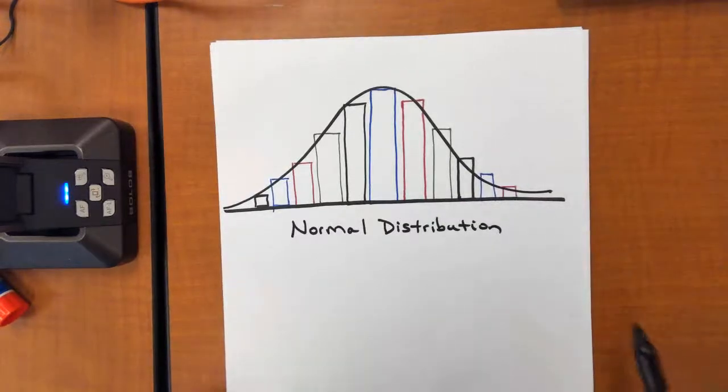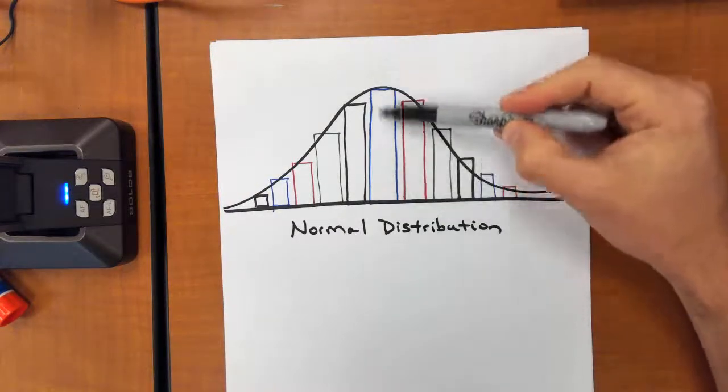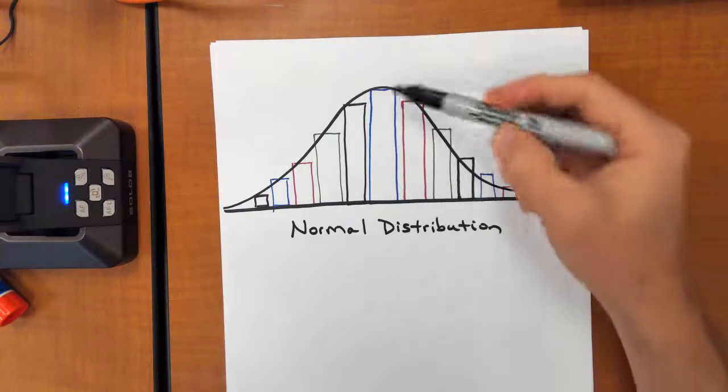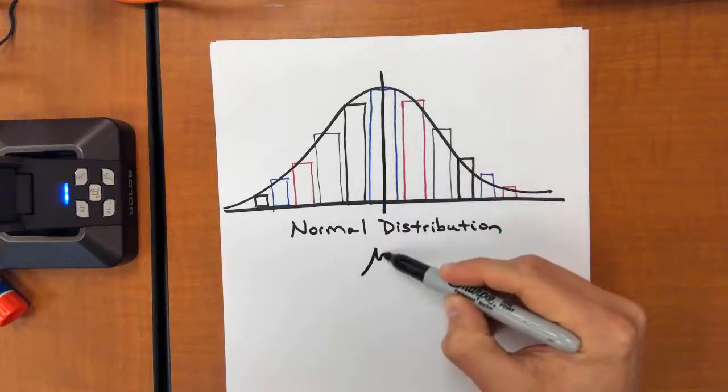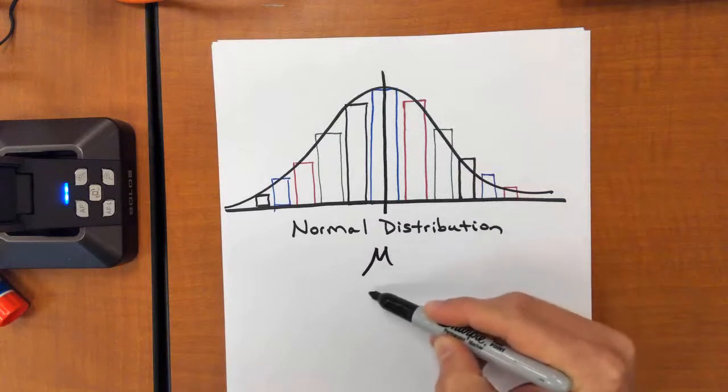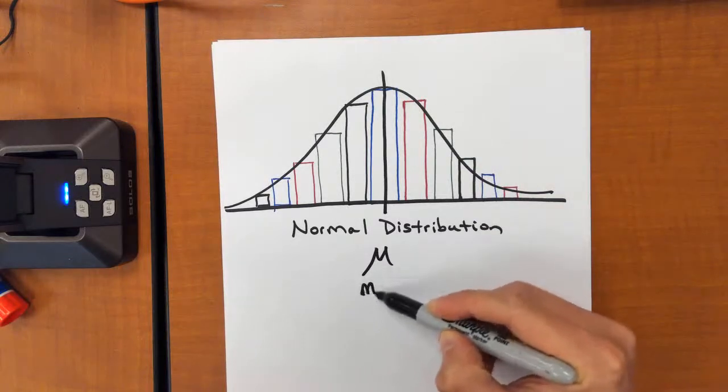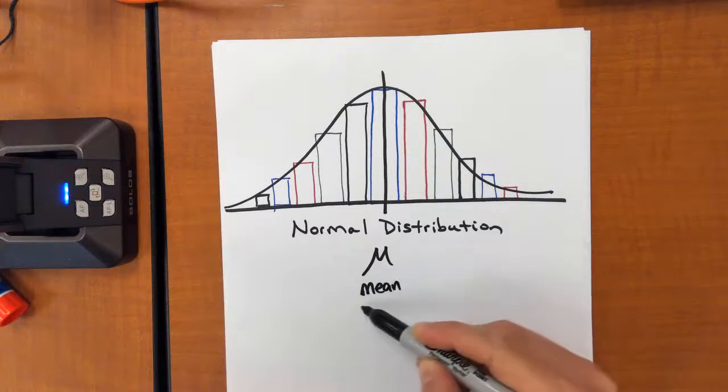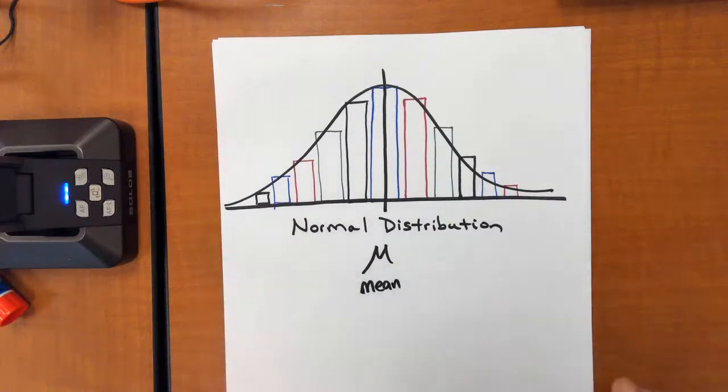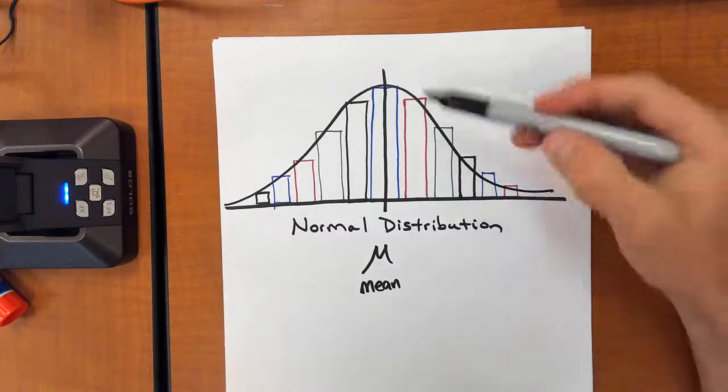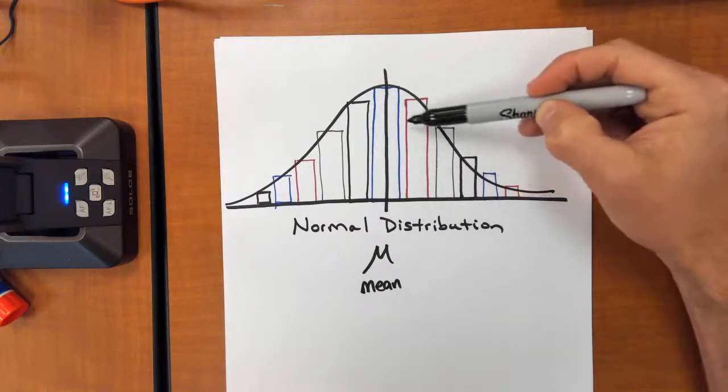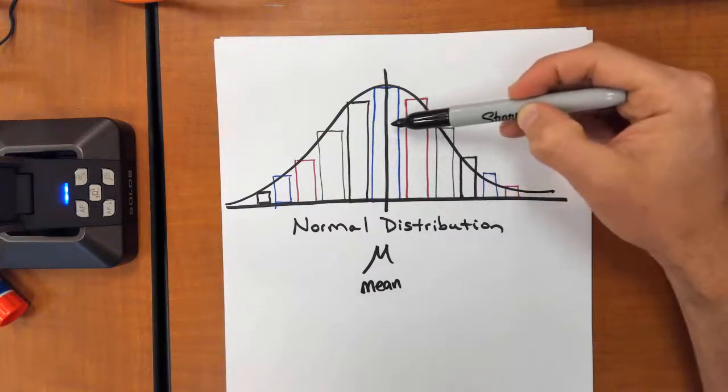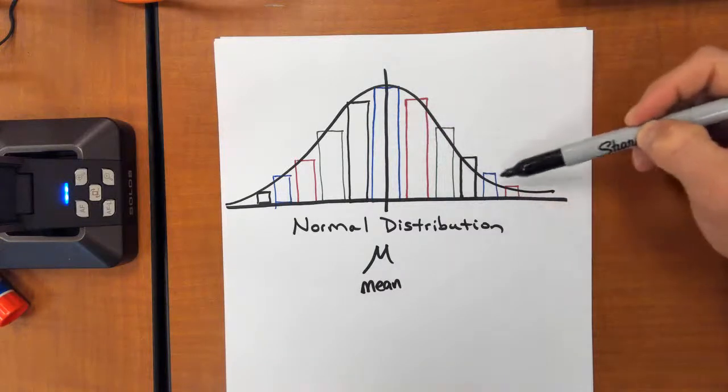It's a normal distribution in that the most values are right in the middle, where you would find your mean. That's the Greek letter mu for mean, also known as the average. So wherever the mean is in the middle, you get a collection of more values close to the mean, and then as you get further from the mean, you get less values.